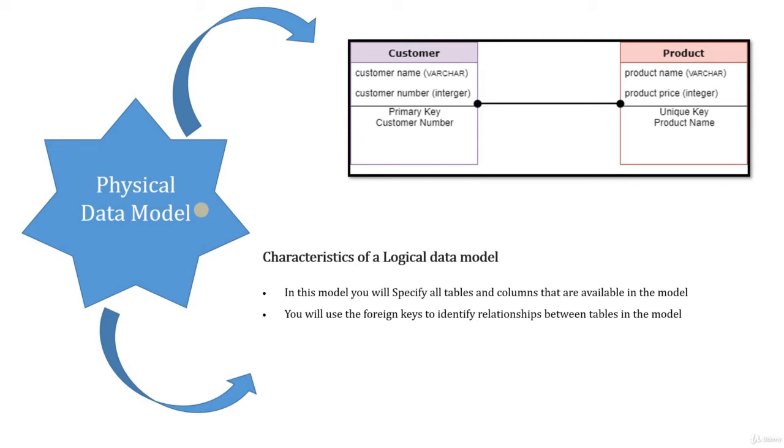The third characteristic is you may want to denormalize the tables based on your requirements. Denormalization will speed up the data retrieval mechanism. Data warehouse is built more on the foundation where the data retrieval is given more importance rather than the data calculations. So the tables are denormalized as much as possible for better performance.